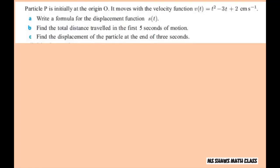Hey everyone. Particle P is initially at the origin O. It moves with the given velocity function. We're going to write a formula for the displacement function and find total distance from 0 to 5 and displacement from 0 to 3.